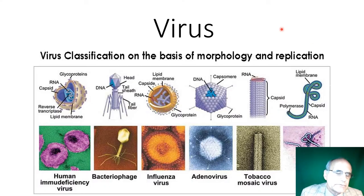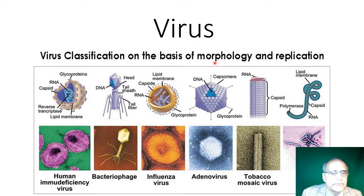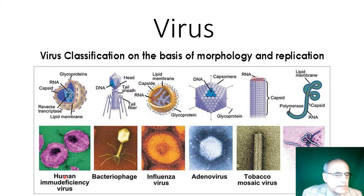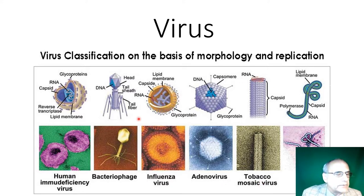To understand COVID is to understand viruses in general. Viruses are classified by their morphology, which means shape, and how they replicate. Very briefly, there's the HIV virus, the T4 bacteriophage — that's a bacteria virus — the influenza virus, adenovirus, tobacco mosaic virus, and the Ebola virus.